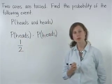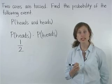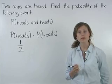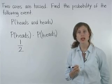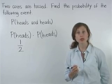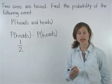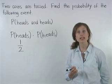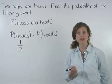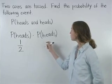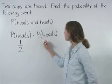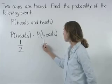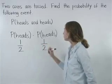On the second coin, the same is true. Again, the coin has two sides — heads and tails — and heads is one of these two sides. So again, the probability of tossing a heads is one over two, or one half.